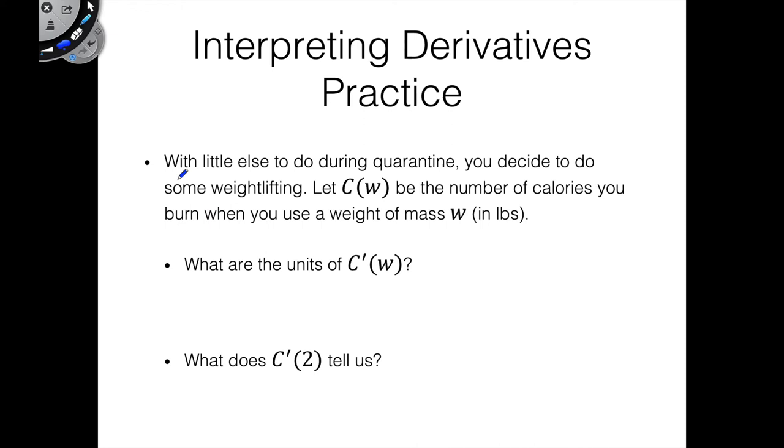So first question, with little else to do during quarantine, we decide to do some weightlifting. We're going to define this function C of W to be the number of calories you burn when using a weight of mass W, and the weight is given in pounds.